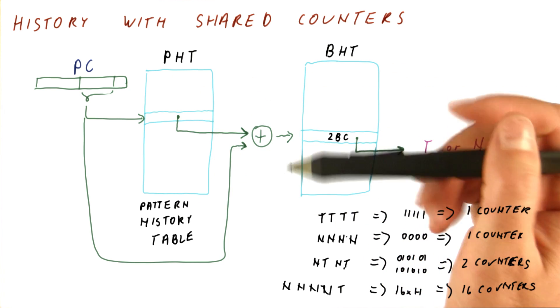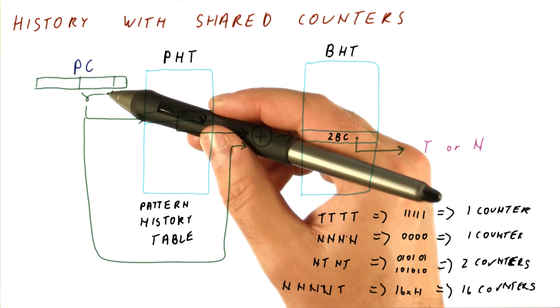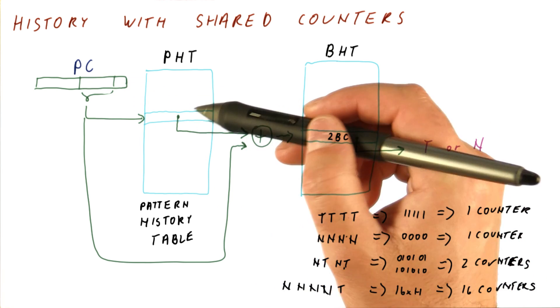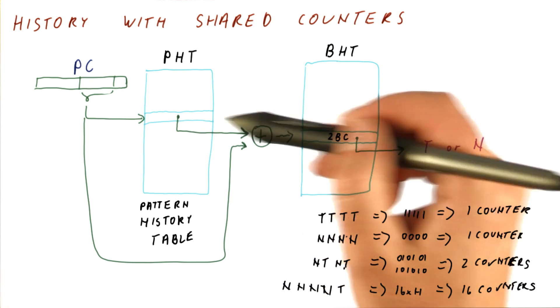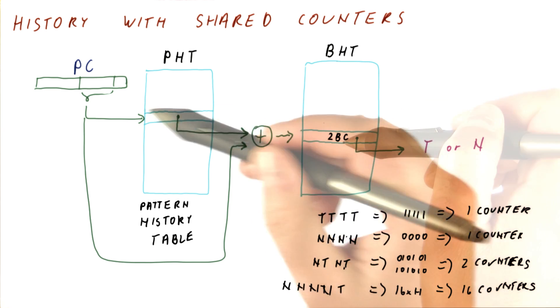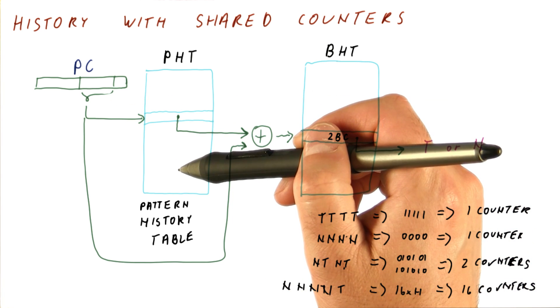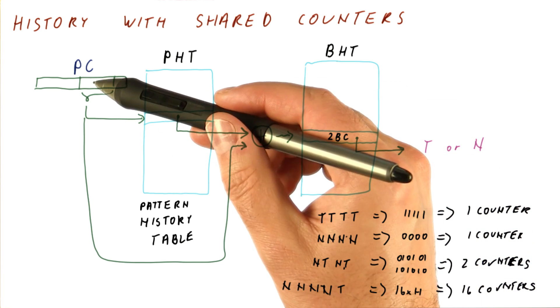The downside is that some branches with particular histories might overlap in which counter they use with other branches and other histories. Pretty much, my branch XORed with its history might map to the same counter as some other branch and its own history when they are XORed.